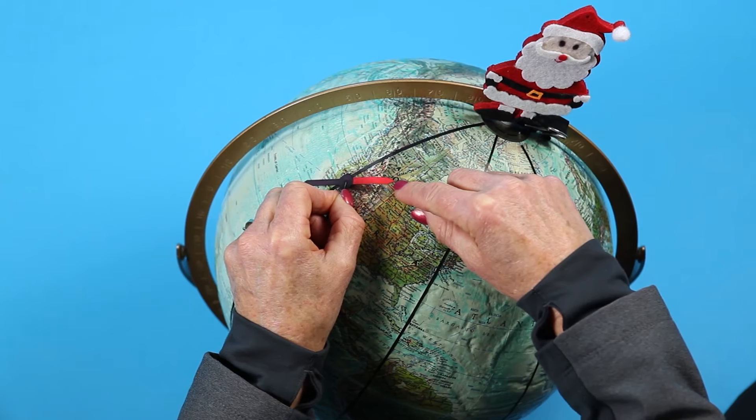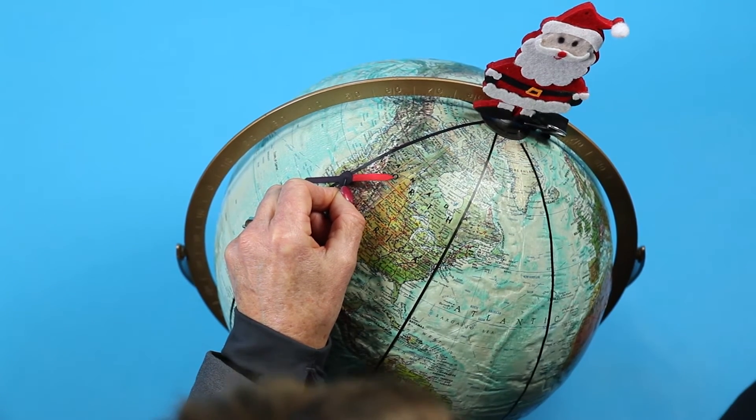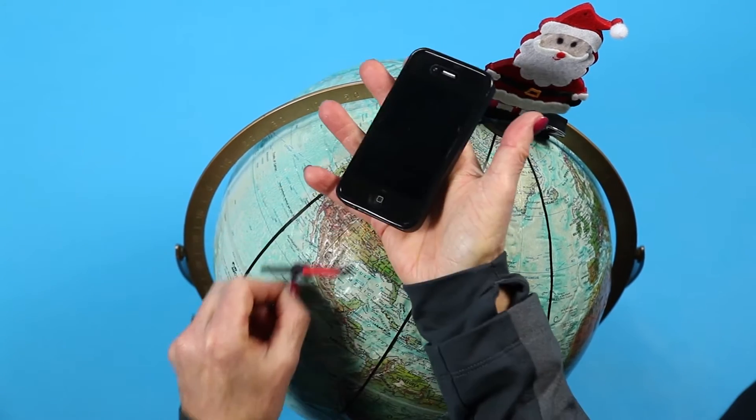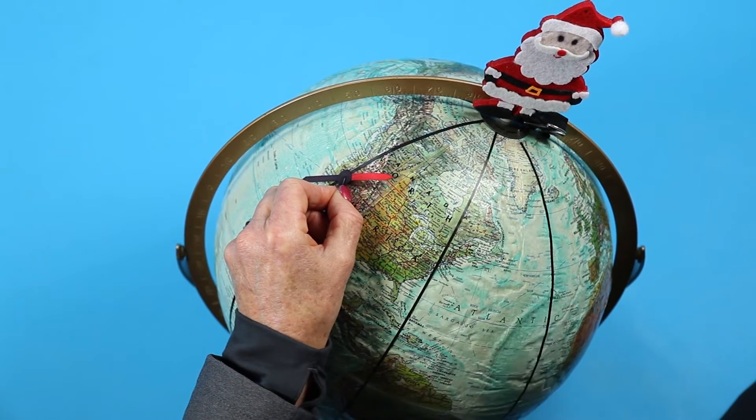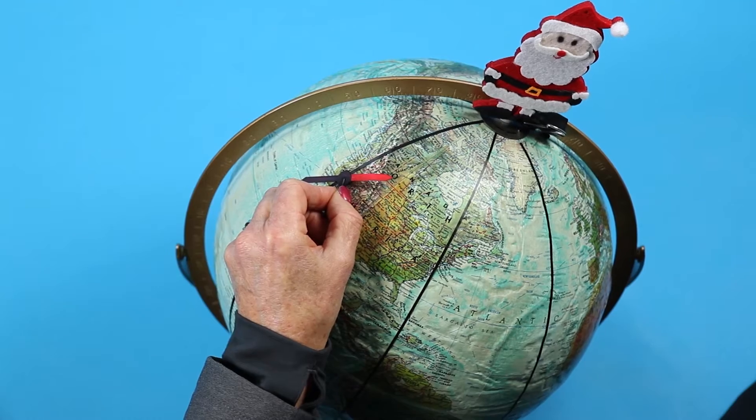This difference between North and magnetic North is called declination. You can look up the local declination online, and once you know it, you can use the magnetic needle as a reliable helper to find North.